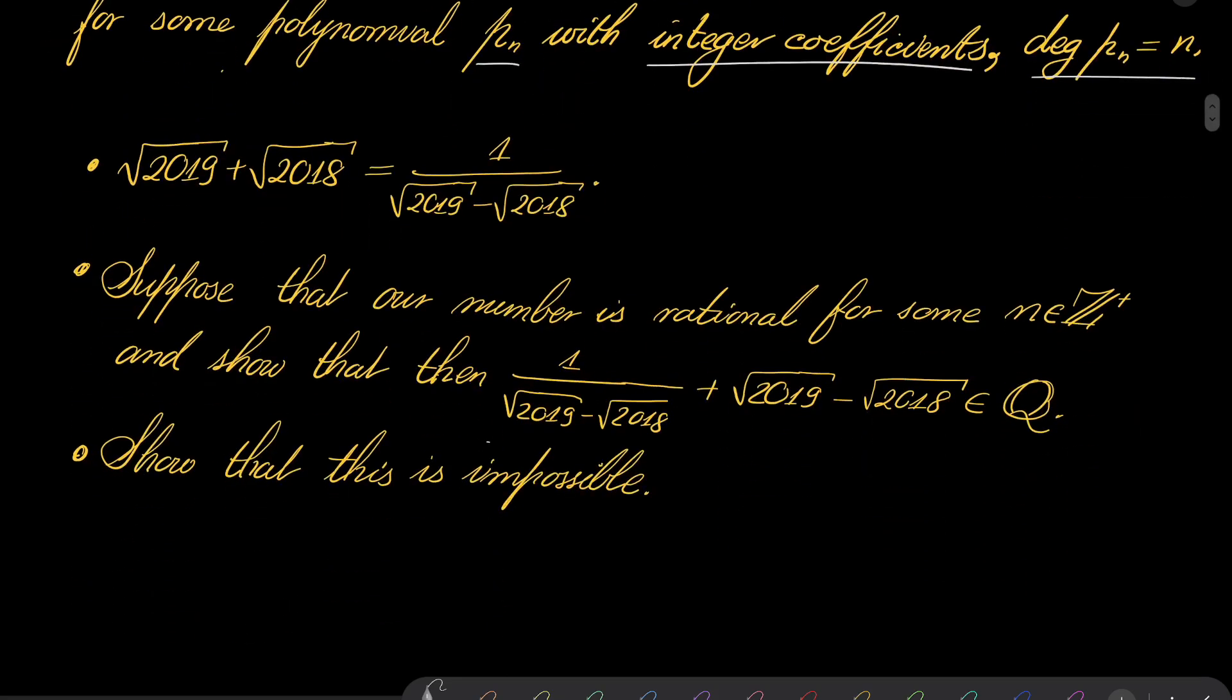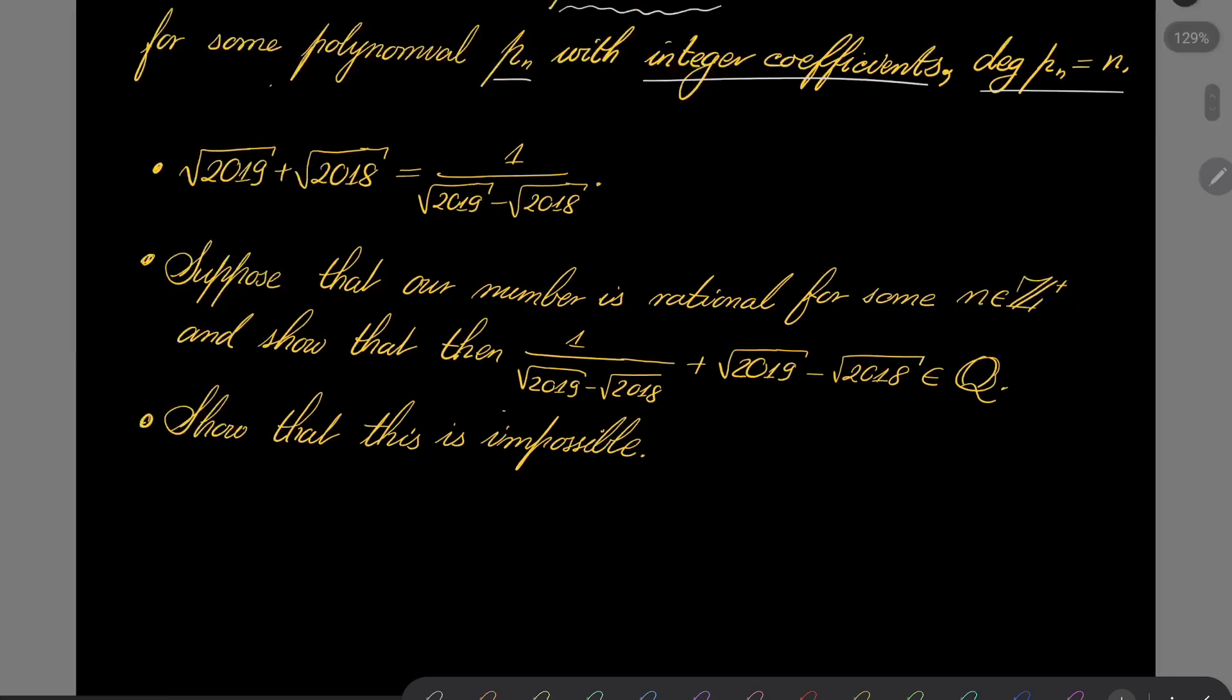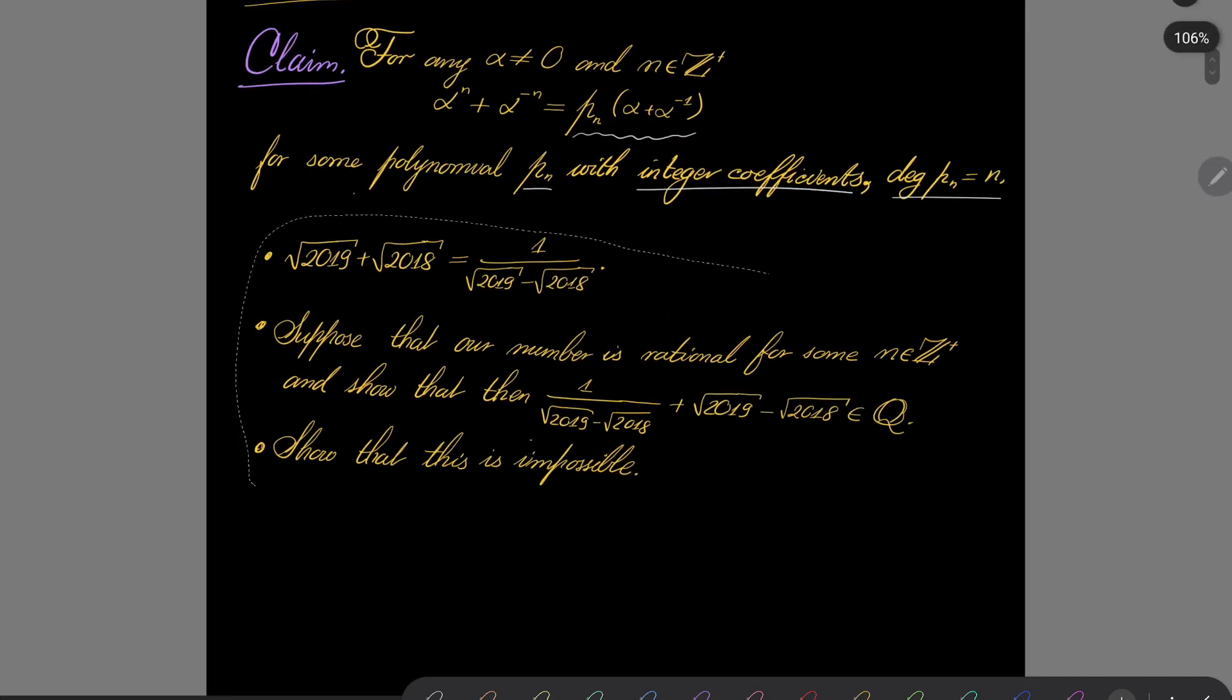Now, second hint: √2019 + √2018 can be written as 1 over the difference of these roots. And now suppose to the contrary that our number is rational for some n and show that this leads to this claim, that this expression is rational, and show that it's impossible. So give this problem a try.